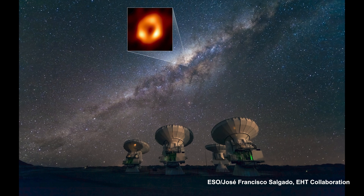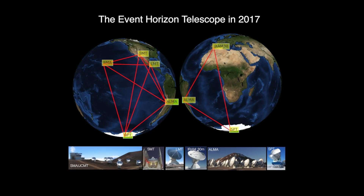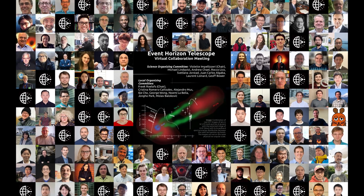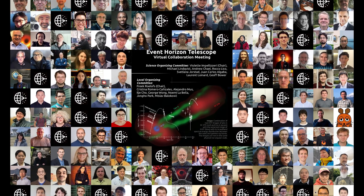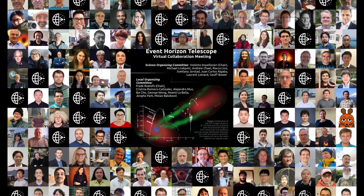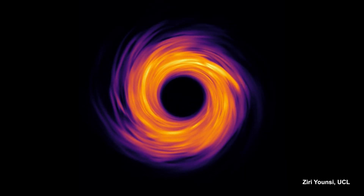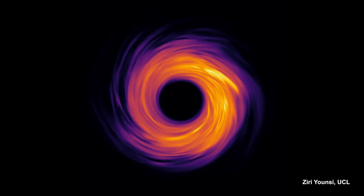The Event Horizon Telescope is a network of radio telescopes spread all around the world and interconnected in such a way that you create a virtual telescope the size of the Earth. There are over 350 people involved, from more than 60 different institutes in more than 20 different countries from almost every continent on Earth. It's a truly international collaboration, and its mission is to image the direct vicinity of the event horizon of supermassive black holes.